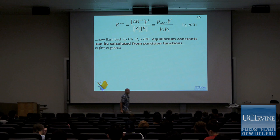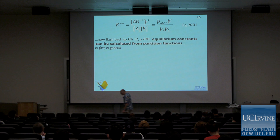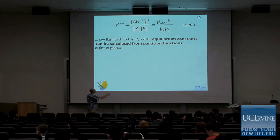If we flash back to Chapter 17, it turns out we can calculate equilibrium constants from partition functions. Partition functions are very important to us because they allow us to make a connection between statistical mechanics and thermodynamics. Partition functions contain information about the actual molecule — if we know something about its state distribution, we can write its partition function. What we learned in Chapter 17 is that you can also use partition functions to calculate equilibrium constants. If you want to read more about that, it's on page 670.